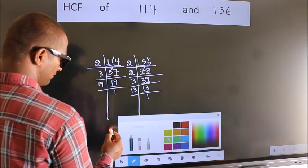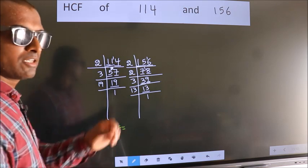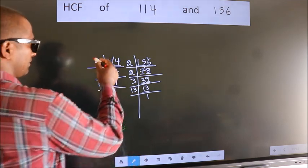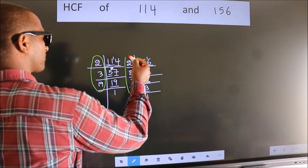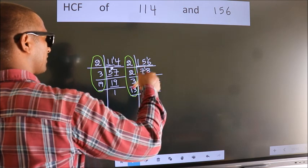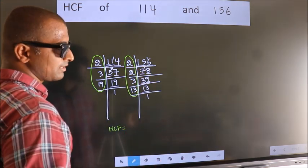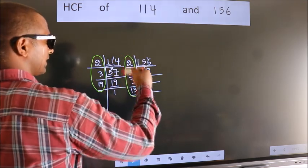Therefore, our HCF is the product of the numbers which should be present over here and also here. So now let us find the numbers which should be present over here and also here.